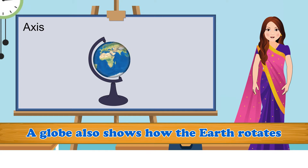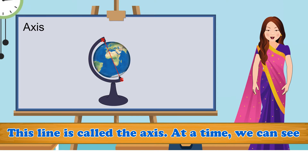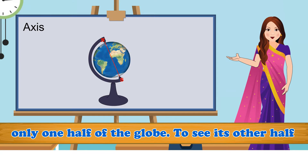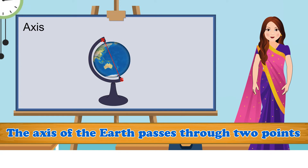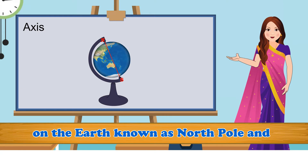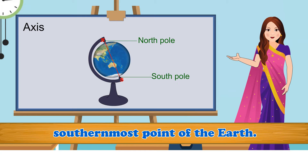Axis: A globe also shows how the Earth rotates on an imaginary line passing through its center. This line is called the axis. At a time, we can see only one half of the globe; to see its other half, we can turn the globe around on its axis. The axis of the Earth passes through two points known as the North Pole and South Pole. The North Pole is the northernmost point of the Earth and the South Pole is the southernmost point of the Earth.